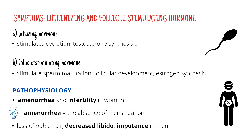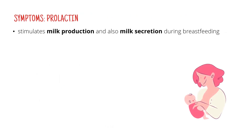Then we have prolactin, which stimulates milk production and also milk secretion during breastfeeding. So as you can imagine, if there's no prolactin, there won't be any lactation.